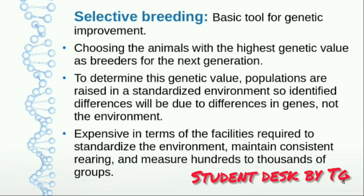To determine the genetic value, we observe the animals day-to-day. We raise them in the same environment so that differences between genes and environment are controlled. In this way, we select our breeders. This is expensive because we have to provide a standardized environment and consistent breeding conditions.